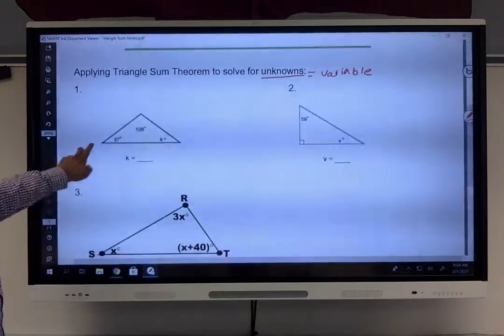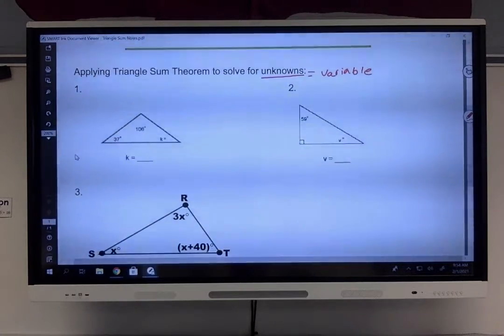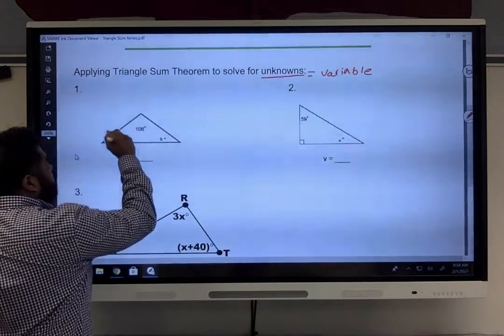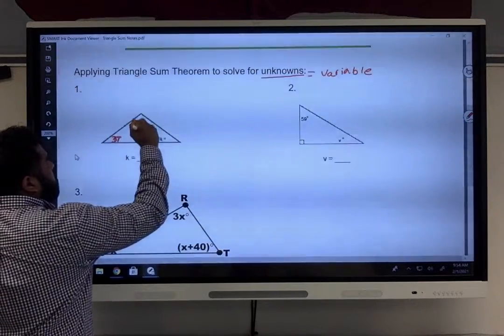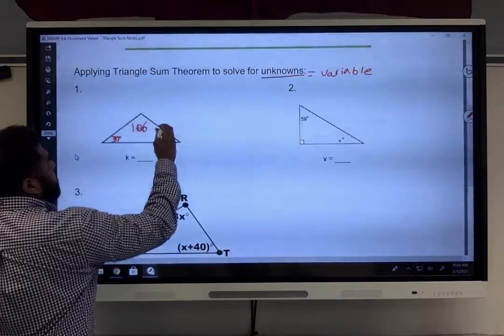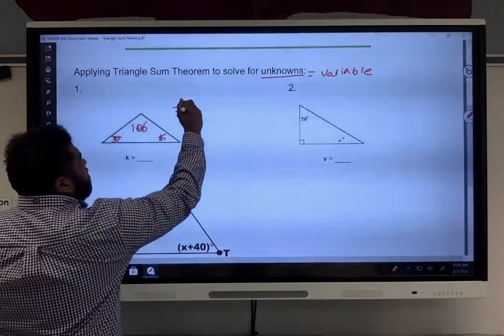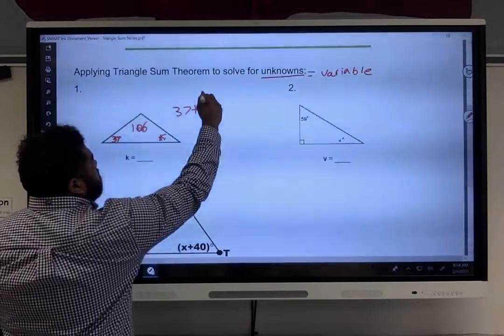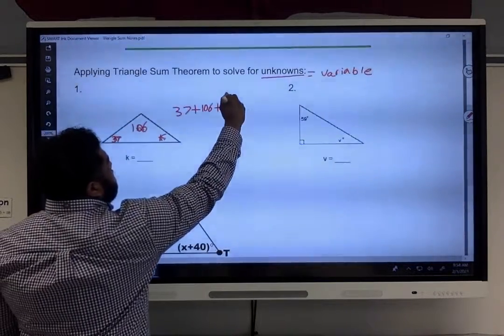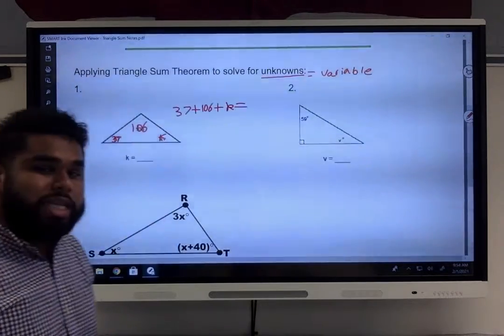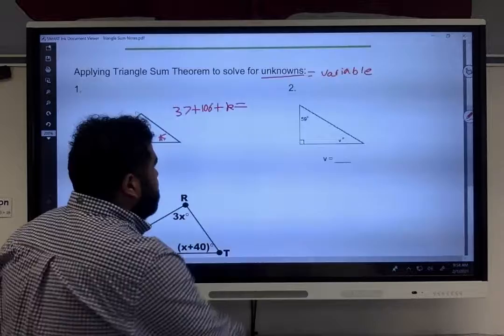Over here we have a triangle, and the angle measurements are 37, 106, and then we have K. So we have 37 plus 106 plus a missing variable K. And what does the angle measurements of the triangle always add up to? 180 degrees.